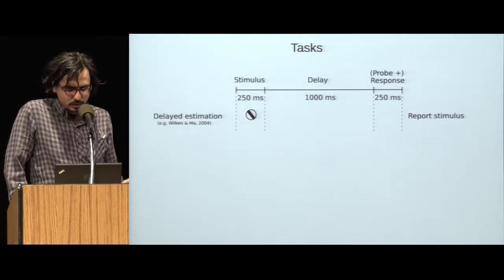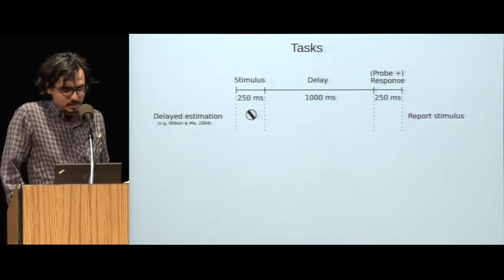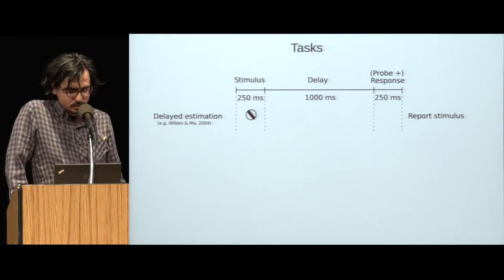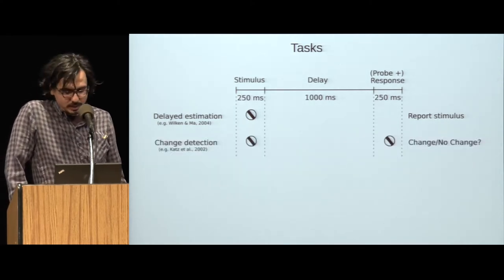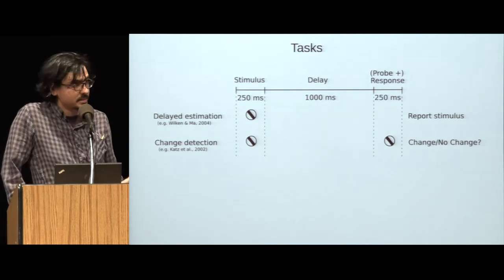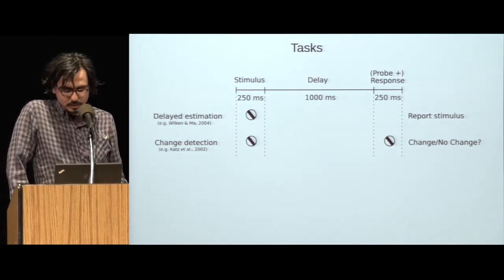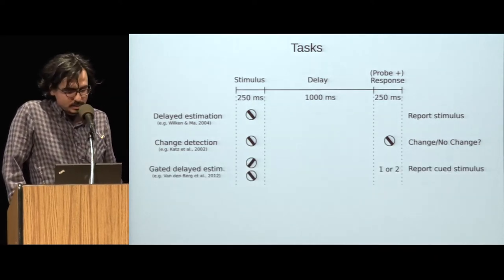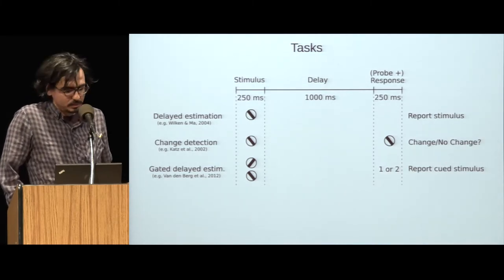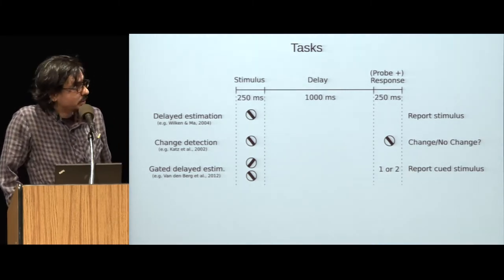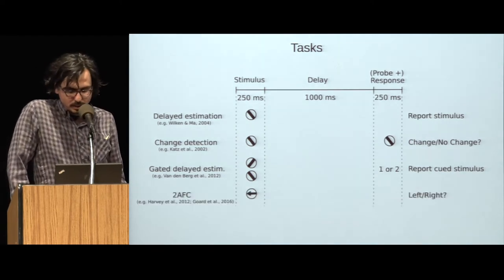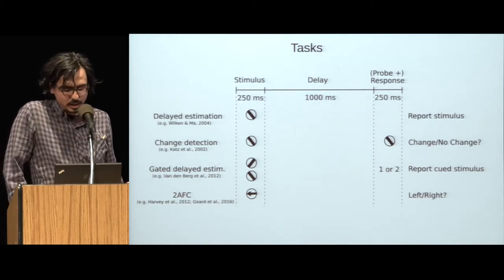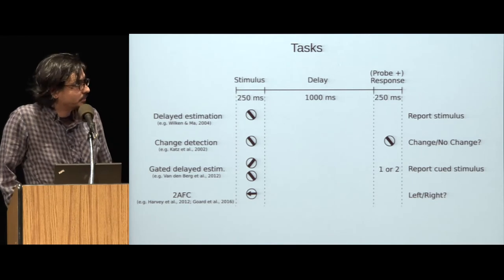I want to quickly go through our tasks now. In the delayed estimation task, one or more stimuli are presented during the stimulus period, and the task is just to report the stimulus after the delay. In the change detection task, a second stimulus is presented after the delay, and the task is to judge whether that stimulus is the same as the first one. In the gated delayed estimation task, two stimuli are presented simultaneously, and after the delay, a cue indicates which one should be reported. Finally, in the simple 2FC task, the stimulus belongs to one of two categories, and the task is to judge which category it belongs to.